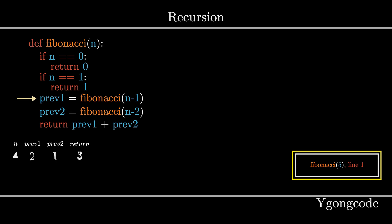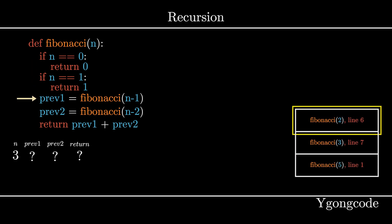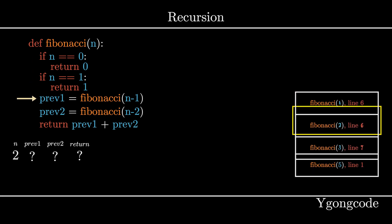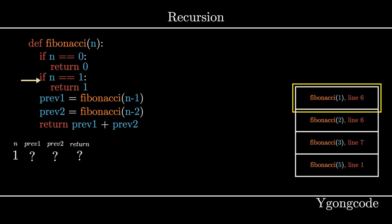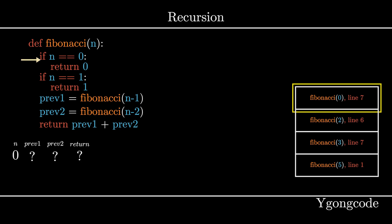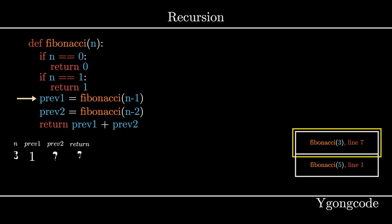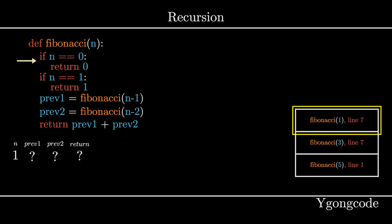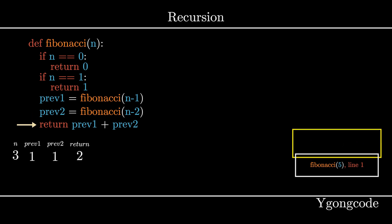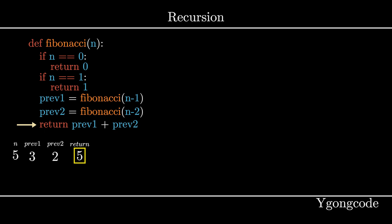At Fibonacci(5), we resume from line 6 and repeat this whole procedure all over again. Now that Fibonacci(5) is completed, we have our final answer, which is 5. Hopefully this visualization was able to help you gain a basic understanding of recursion.